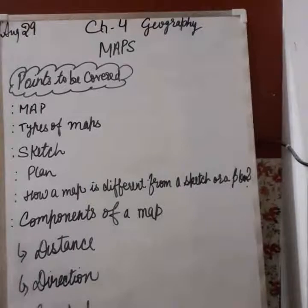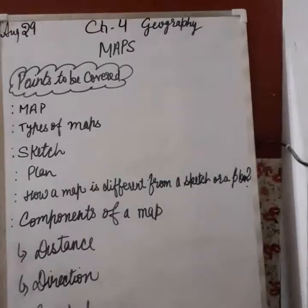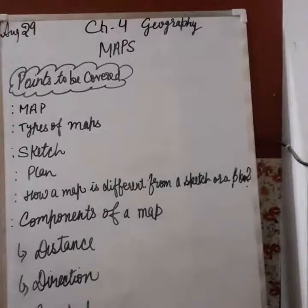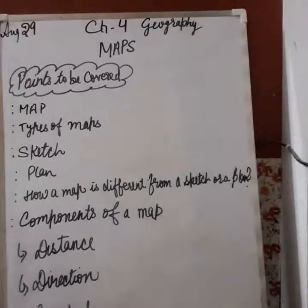Symbols are the third important component of a map. It is not possible to draw features like buildings, roads and bridges at their actual size on a map. So they are shown by certain letters, shapes, colors, pictures and lines. You are likely already aware of which colors are used — for depicting water we use blue, for land we use brown, and for forested areas we use green. These are all called symbols.